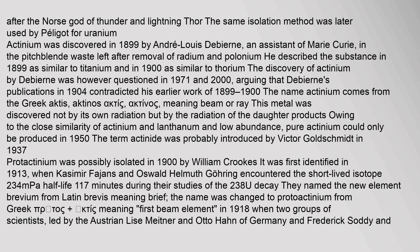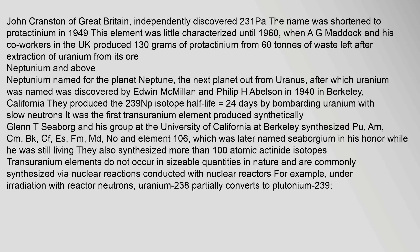Actinium was discovered in 1899 by André-Louis Debierne, an assistant of Marie Curie, in the pitchblende waste left after removal of radium and polonium. The discovery was later questioned in 1971 and 2000. The name actinium comes from the Greek 'aktis/aktinos' meaning beam or ray. Pure actinium could only be produced in 1950. The term 'actinide' was probably introduced by Victor Goldschmidt in 1937. Protactinium was possibly isolated in 1900 by William Crookes, and first identified in 1913 when Kasimir Fajans and Oswald Helmuth Göhring encountered the short-lived isotope 234Pa (half-life 1.17 minutes) during studies of 238U decay, naming it brevium. The name was changed to protactinium in 1918 when Lise Meitner, Otto Hahn, Frederick Soddy, and John Cranston independently discovered 231Pa.